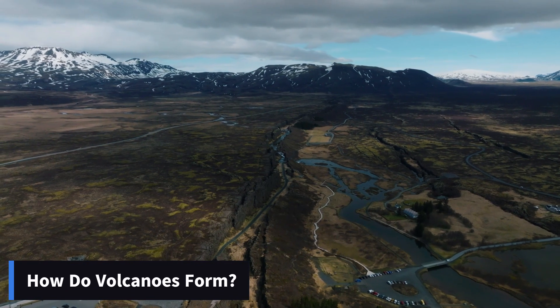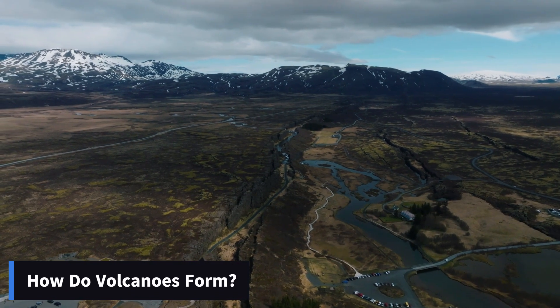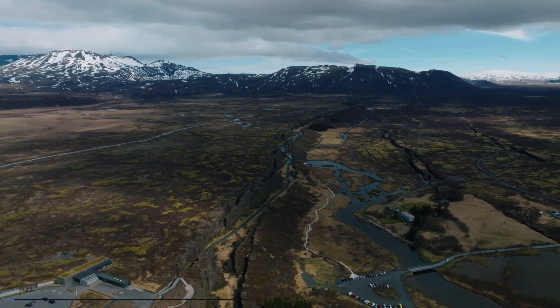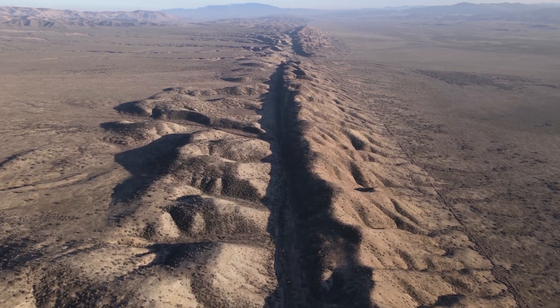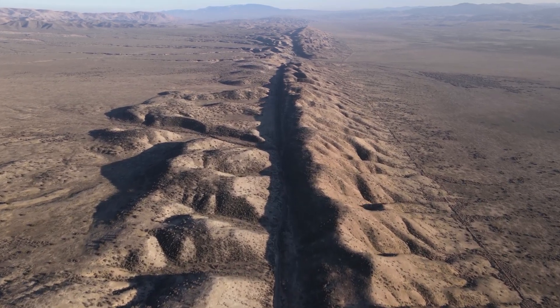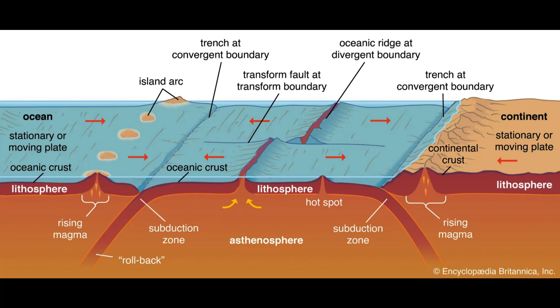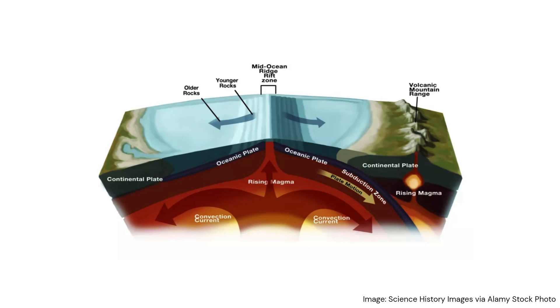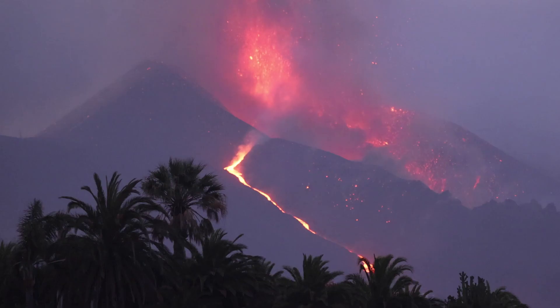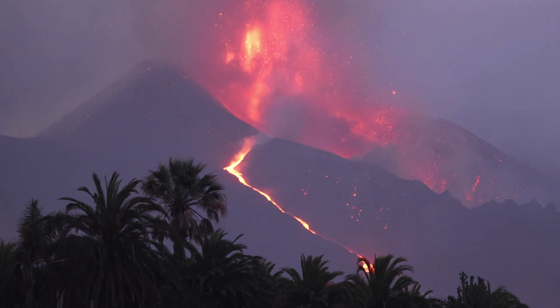The majority of volcanoes on Earth are found along tectonic plate boundaries, where the massive slabs of the Earth's lithosphere are colliding and interacting with each other. When two tectonic plates collide, one of them is pushed beneath the other into a subduction zone, where high pressure and temperature can release water from the rocks and form magma. This magma can then rise to the surface and erupt through a volcano.